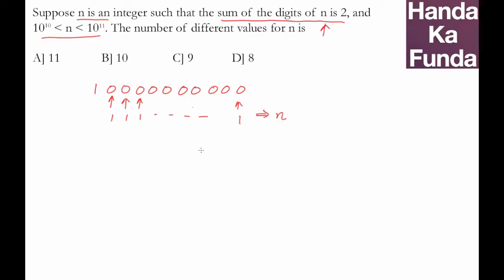Or one possibility is that the first digit itself becomes 2, and then I have 2 followed by 10 zeros. That is another possible value of n. So how many possible values of n are there?